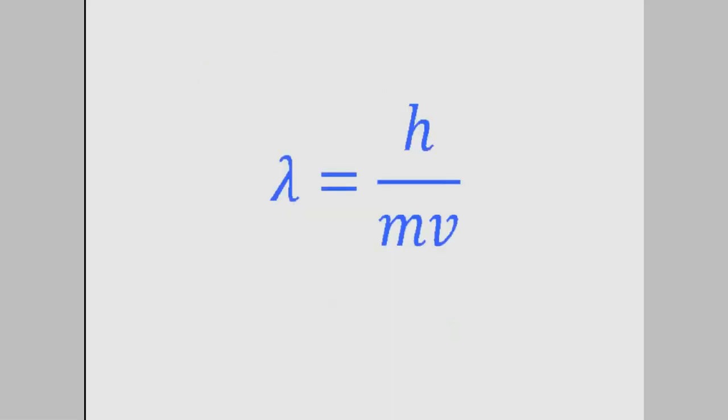Now one more thing. Look at this equation again. One thing you notice is that the mass is down here in the bottom of the fraction. So the heavier a particle is, the shorter its wavelength is.